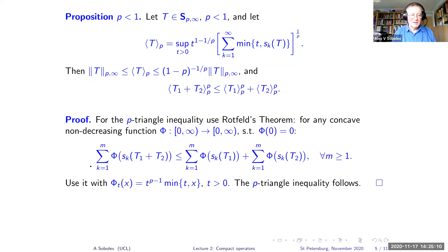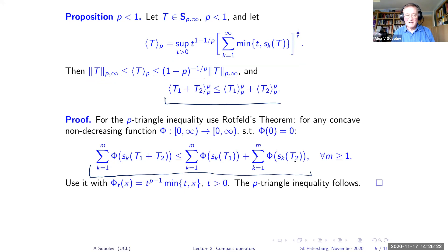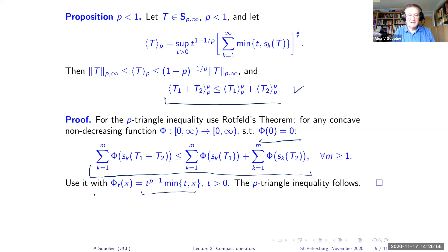This p-norm satisfies the triangle inequality when raised to power p. Rottfeld's theorem plays the prominent role in the proof. To prove the inequality, choose the concave non-decreasing function in a clever way, then the triangle inequality follows by substitution. This proposition is not in Birman–Solomyak's book; it appears in a paper co-authored by Peller, which I will reference at the end.